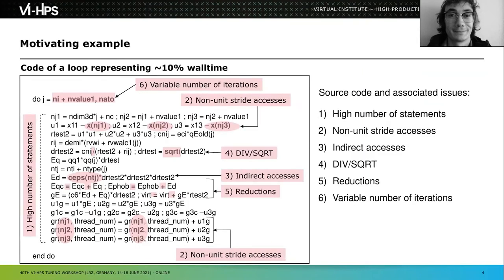Here you can see a motivating example from a real application doing molecular dynamics, written in Fortran. There are many issues clearly visible just by looking at the source code. It's a do-loop going for an unknown number of iterations — using a variable whose value is only defined at runtime — which could be an obstacle for loop optimizations. Compilers can do a much better job when they know how many iterations a loop will do in advance.